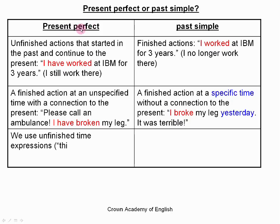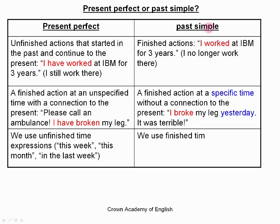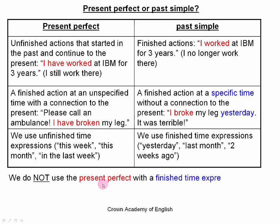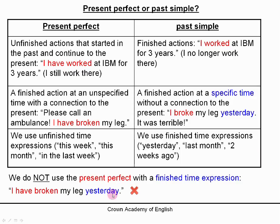Third: in the present perfect we use unfinished time expressions — this week, this month, in the last week. But in the past simple we use finished time expressions — yesterday, last month, two weeks ago. That's a big difference. And very importantly, we do not use the present perfect with a finished time expression. So we do not say 'I have broken my leg yesterday' — that is wrong. If we want to say 'yesterday', we must say 'I broke my leg yesterday'.